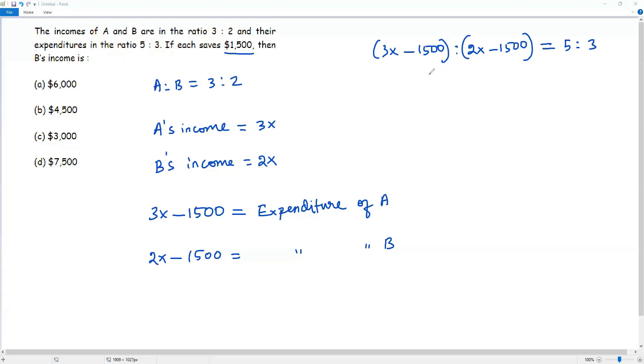To solve for x, we can write these two ratios as fractions. So I'm getting (3x - 1500)/(2x - 1500) = 5/3. Now we can do cross multiplication, then I'm getting 3 times (3x - 1500) equals 5 times (2x - 1500).